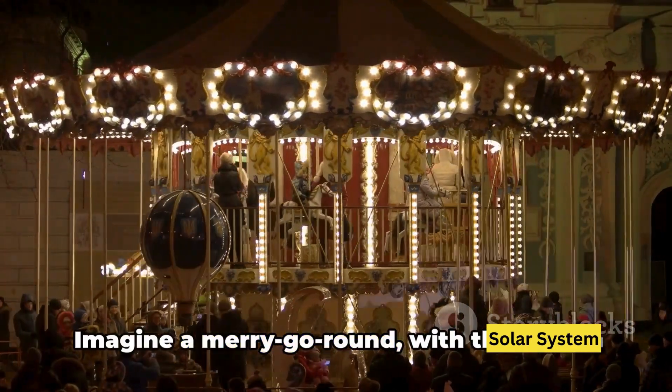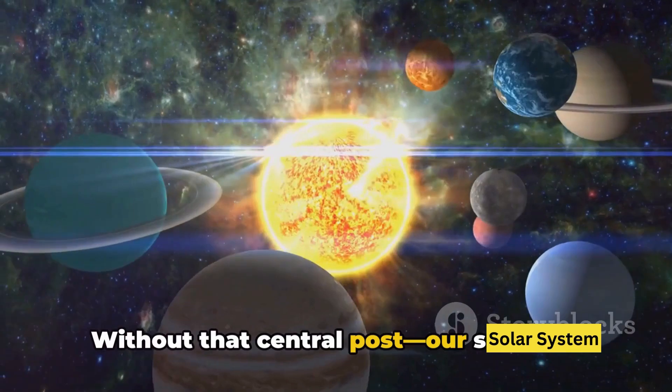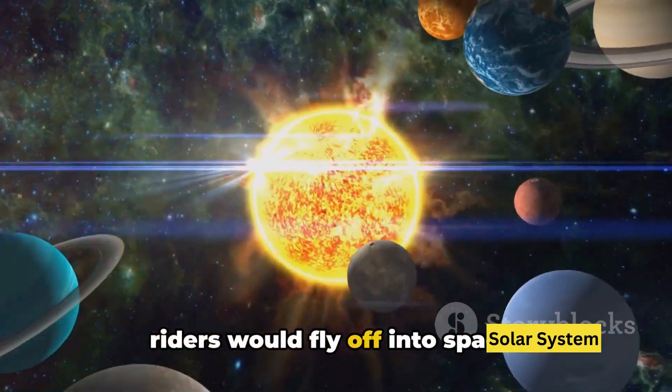Imagine a merry-go-round with the sun as the central post and the planets as the riders. Without that central post, our sun, the riders would fly off into space.